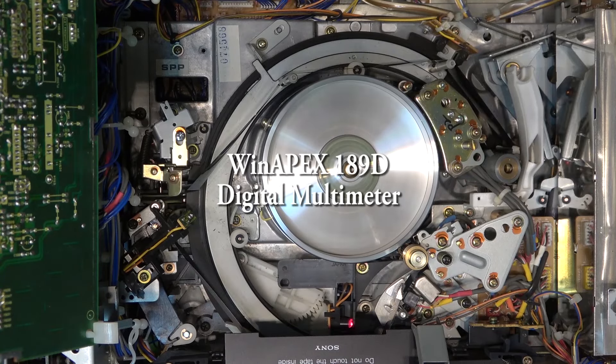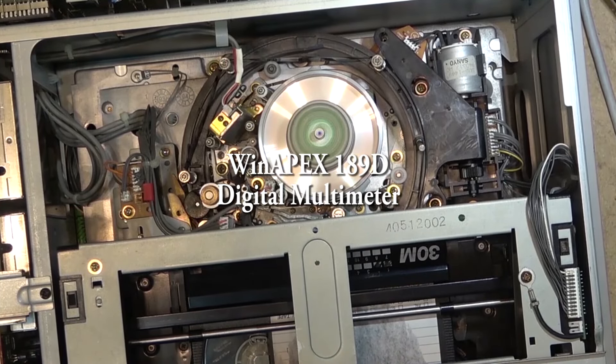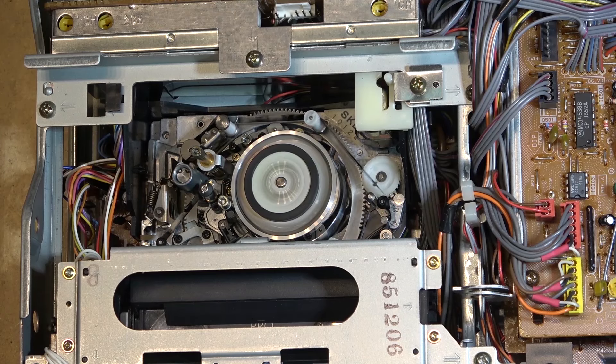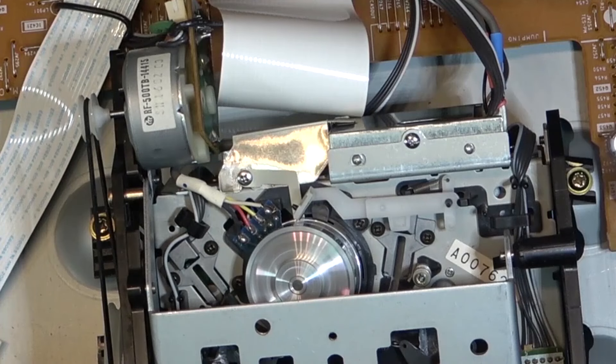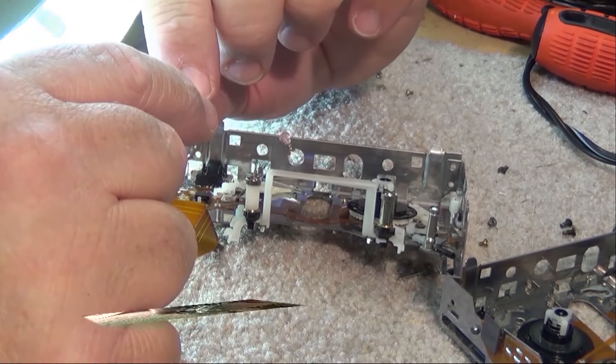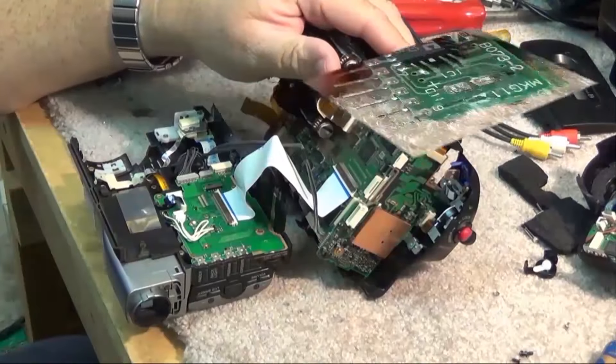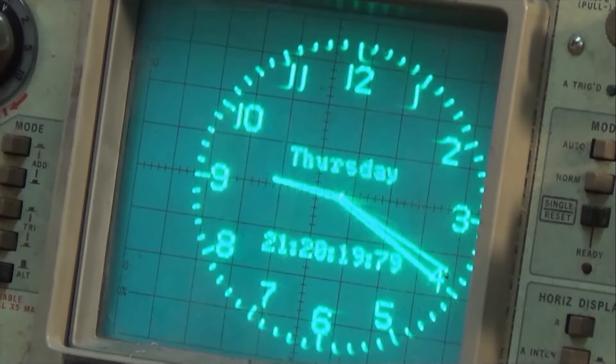This one's going to be real quick. I've got a new meter here that I got from Banggood. This is a Winapix 189D, a digital multimeter with six counts on the meter. What's unique about this one is it'll measure up to 20 amps of current, whereas most meters top out at 10.